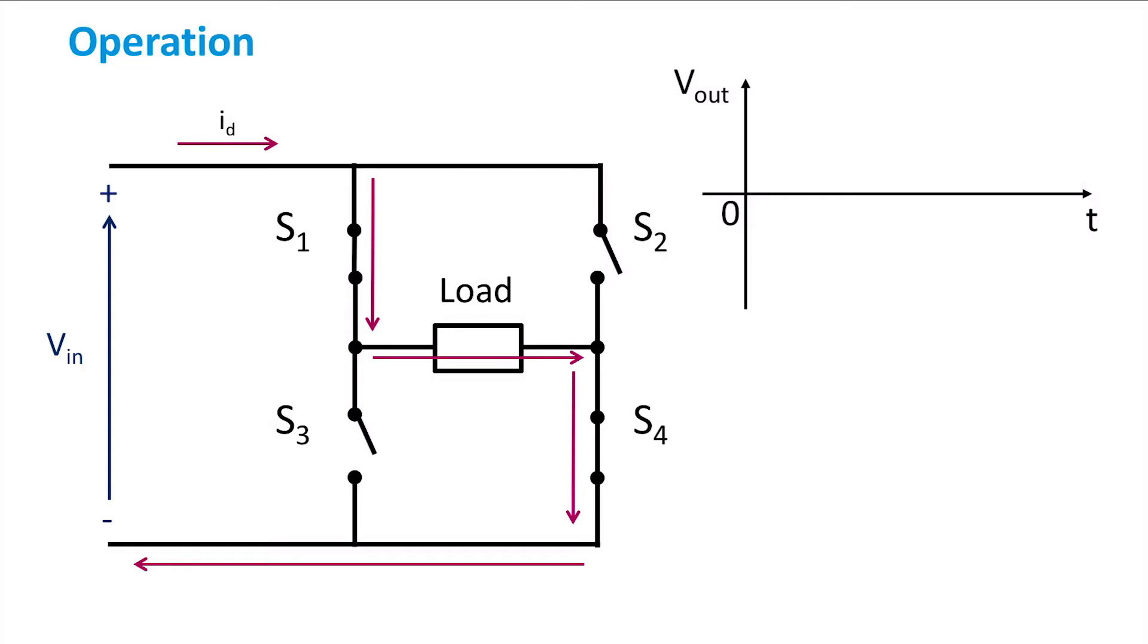When S1 and S4 are closed, the voltage has positive polarity and equals the input voltage. When there is a commutation between the two switch pairs, S1 and S4 are switched off, while S2 and S3 are switched on, almost instantly.